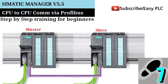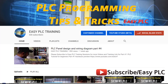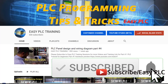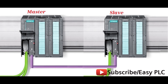Welcome to another training session of the SIMATIC Manager. Today we will see how to establish communication between two Siemens S7-300 CPUs via Profibus DP ports and how to exchange data between two CPUs. Before starting, please subscribe to my YouTube channel for more interesting upcoming videos.